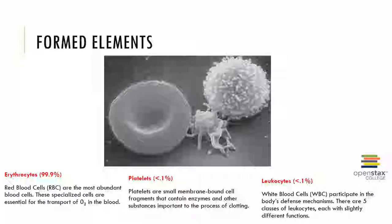The formed elements are blood cells and cell fragments suspended within the blood plasma. The formed elements are erythrocytes, leukocytes, and thrombocytes. Erythrocytes are also known as red blood cells and they are the most abundant blood cell, specialized for the transport of oxygen. Leukocytes, also known as white blood cells, participate in the body's defense mechanisms and are divided into five classes, each with a slightly different function. Thrombocytes are also known as platelets — not true cells, but small membrane-bound cellular fragments containing enzymes and other substances important for blood clotting.